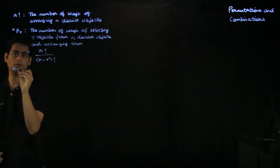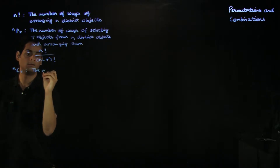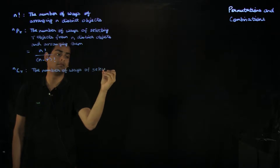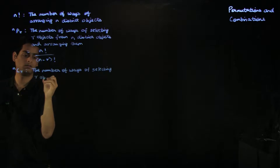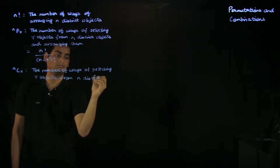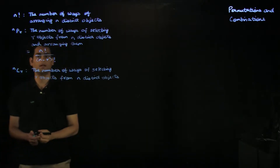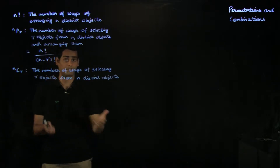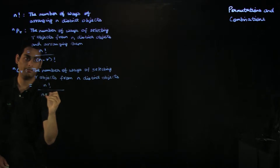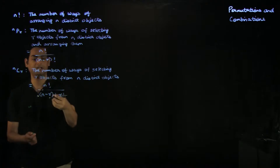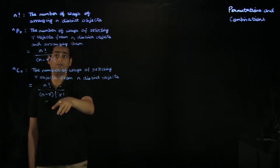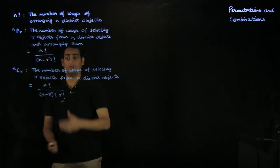In this lecture, we will look at a third related concept, which is nCr — the number of ways of selecting r objects from n distinct objects. Now we only care about selecting r objects; we don't care about the arrangements within them. You can derive this quantity to be n factorial divided by n minus r factorial times r factorial. An interpretation is: you take nPr, the number of ways of selecting and arranging r objects from n distinct objects, and divide by r factorial, the number of ways of arranging those r objects within themselves, to get nCr.